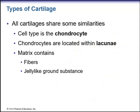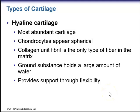Hyaline cartilage is the most abundant cartilage. The chondrocytes appear spherical. The collagen unit fibril is the only type of fiber found in the matrix of hyaline cartilage. The ground substance holds a large amount of water, which provides support through flexibility.